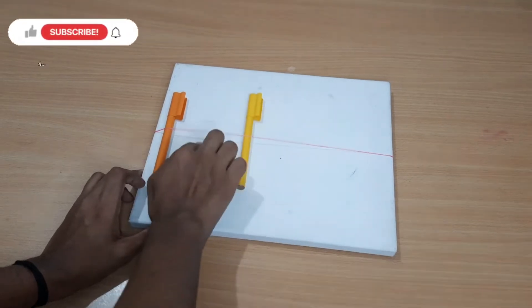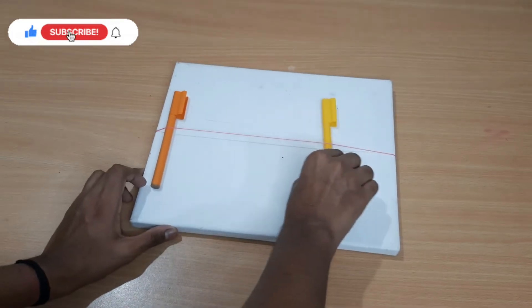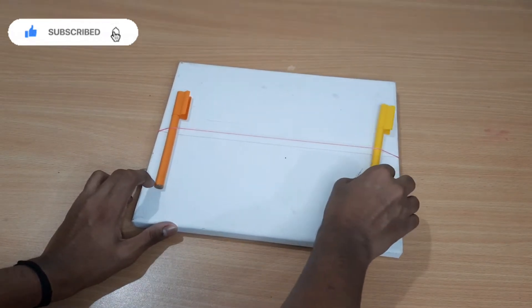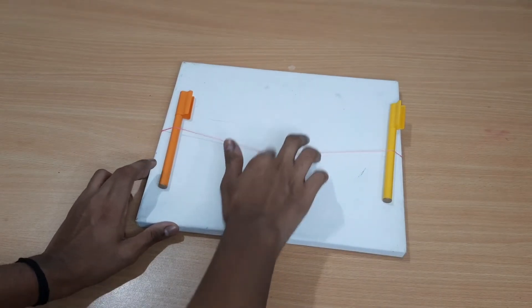Now adjust the distance between the pens to increase the length of the vibrating band. Pluck it and hear the pitch. You will notice a difference in the nature of the sound produced as we change the length of the string.